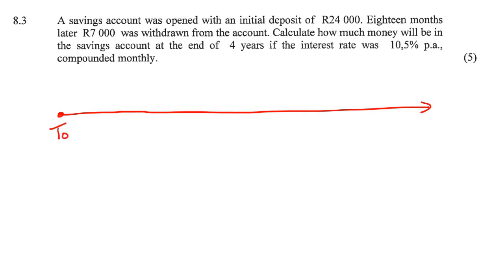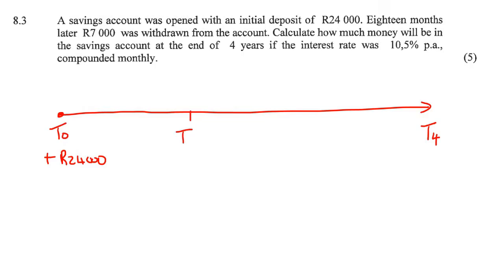We start here at the very beginning, and they want to know what happens after four years. So we start off by adding 24,000 rand. Then 18 months is 1.5 years — one and a half years. So at T1.5, we are going to withdraw — we're going to take money out — 7,000 rand.